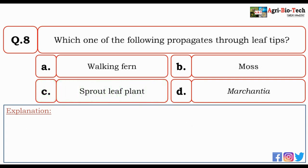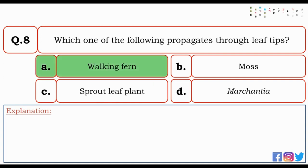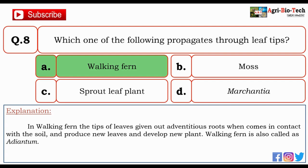Next question: which one of the following propagates through leaf tips? Options: Walking Fern, Moss, Sprout Leaf Plant, and Marchantia. The correct option is A — Walking Fern. In Walking Fern, the tips of leaves give out adventitious roots when they come in contact with the soil and produce new leaves, developing a new plant. Walking Fern is also called Adiantum.